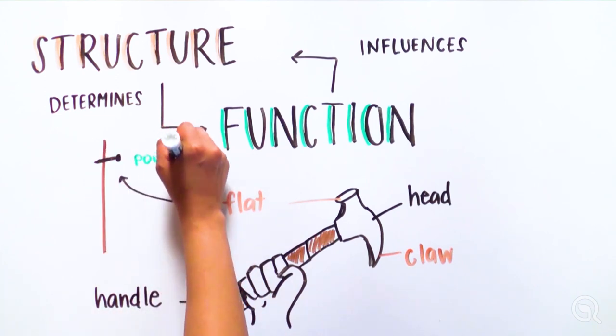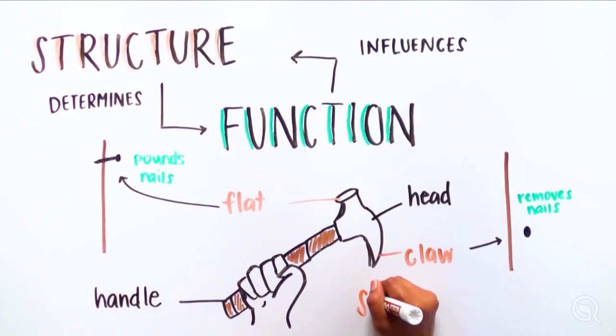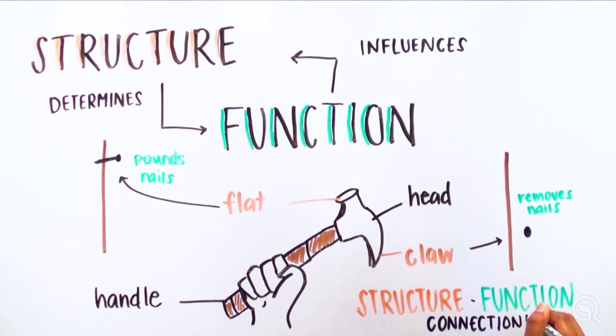But what is their function? The flat face pounds nails while the claw removes nails. Hammer's structure is built with a specific purpose in mind, and this determines its function, in this case two functions. This is the structure-function connection.